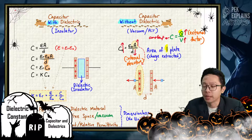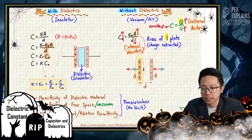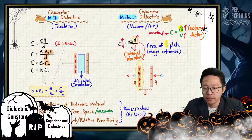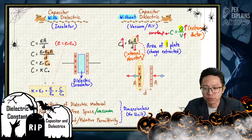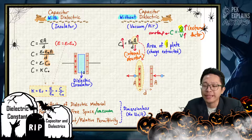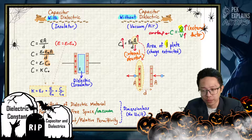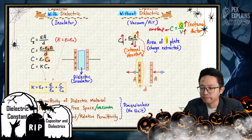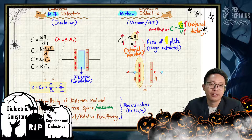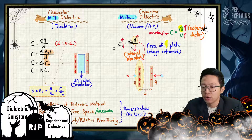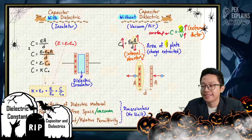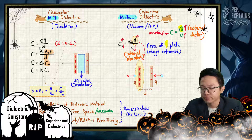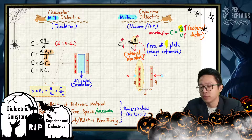Now let's talk about capacitor with dielectric. For without dielectric, it just has two plates with vacuum or air in the middle between them. But for a capacitor with dielectric, it has an insulator separating the two plates. The formula is C = εA/D. Without dielectric we use C₀ and ε₀; with dielectric we use C and ε — there is no naught subscript.